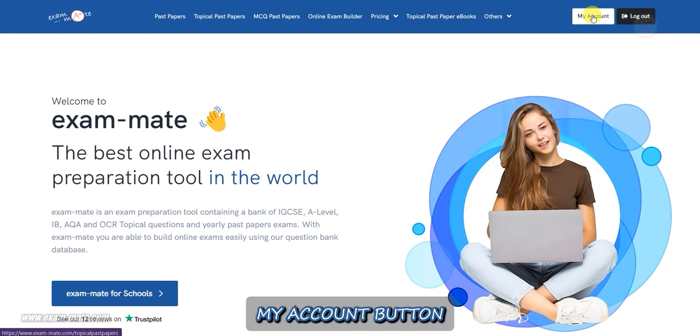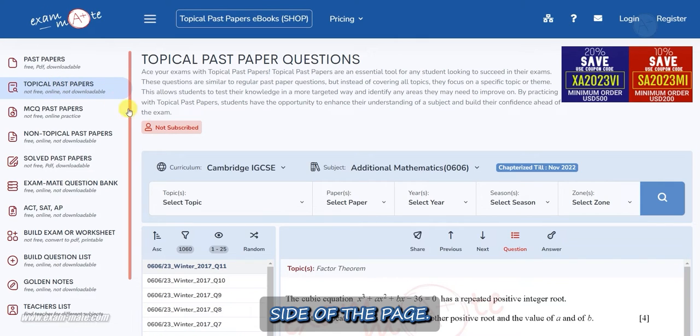First, we click on the my account button on the main page. Then, we click on topical past papers on the left side of the page.